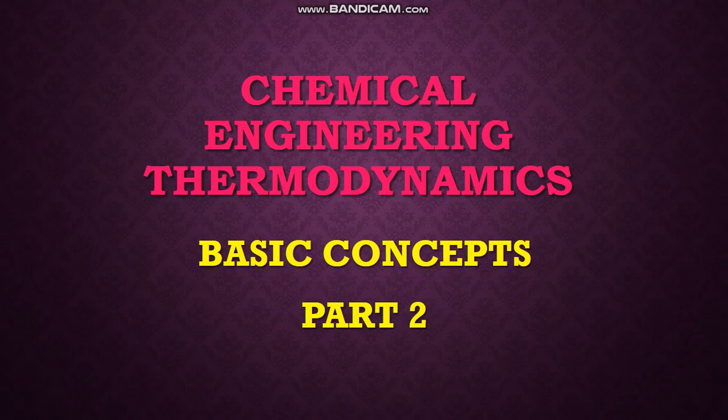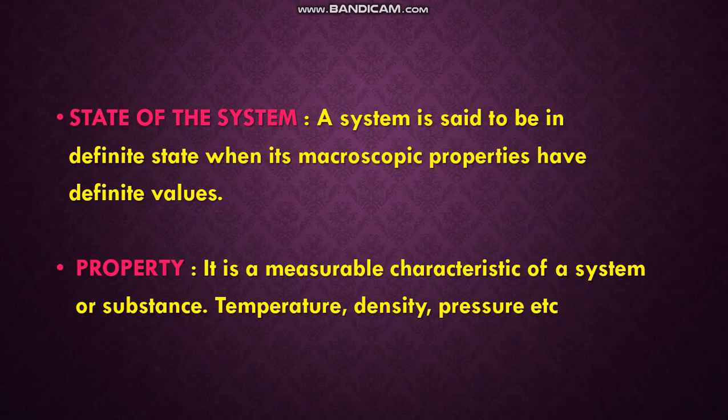Today the topic is chemical engineering thermodynamics basic concepts part two. First one is state of the system. A system is said to be in a different state when its macroscopic properties have definite values. When the macroscopic properties have definite values, we can say that the system is in a particular state.